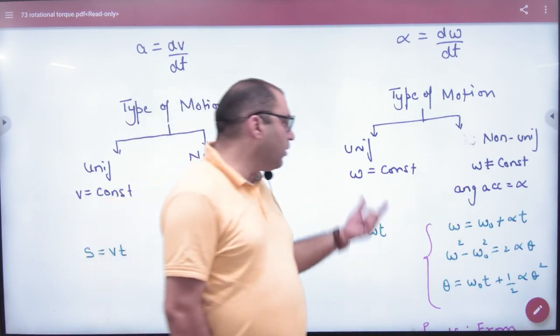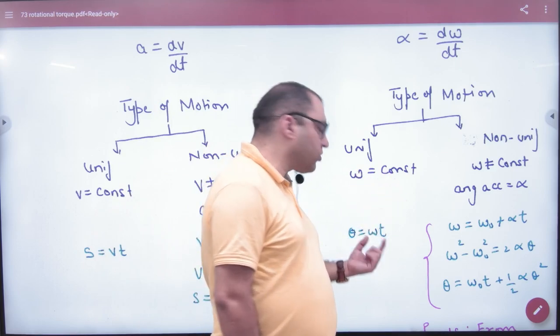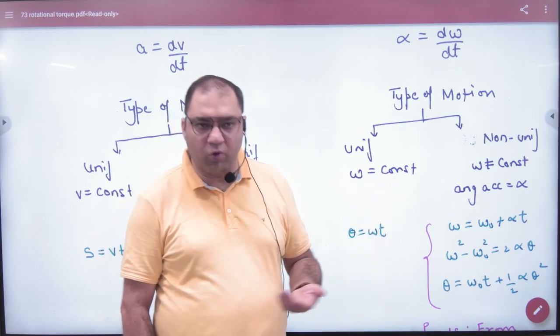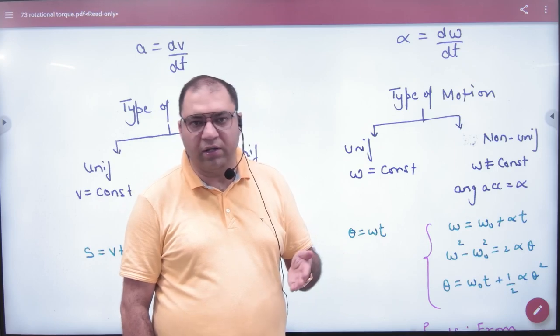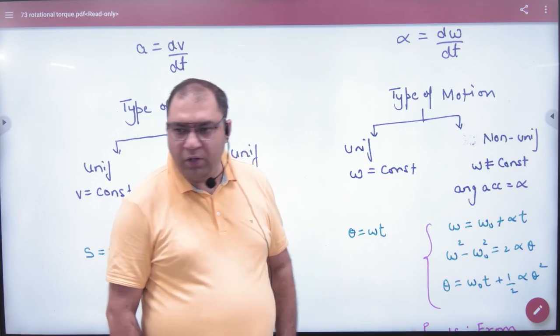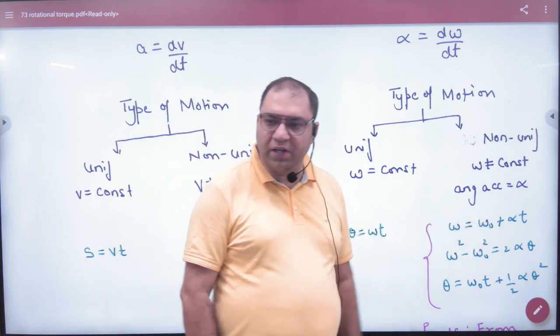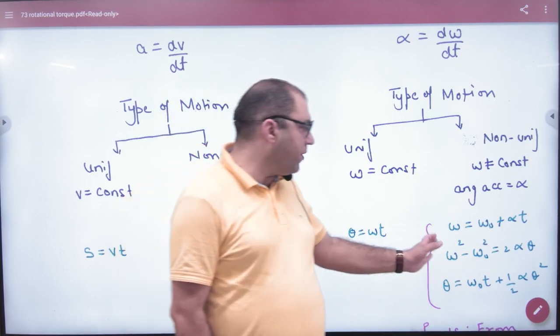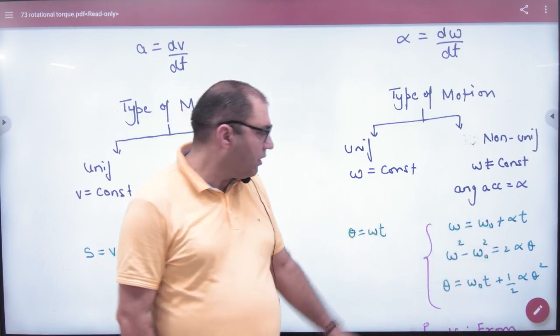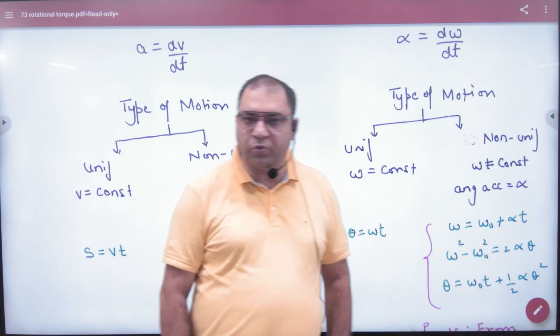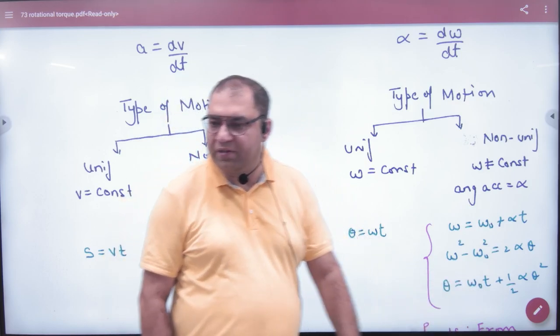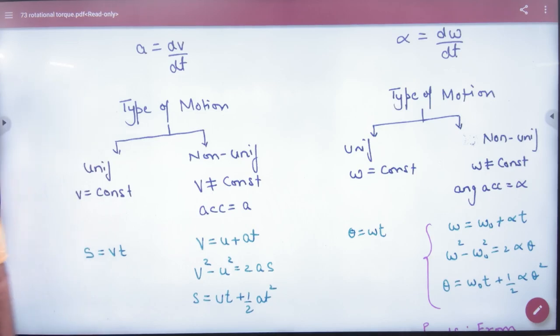So if omega is constant, which equation do we use? Theta equals omega t, just like s equals vt. And similarly, omega equals omega naught plus alpha t. Omega squared minus omega naught squared equals 2 alpha theta. And theta equals omega naught t plus half alpha t squared. So this point is clear here.